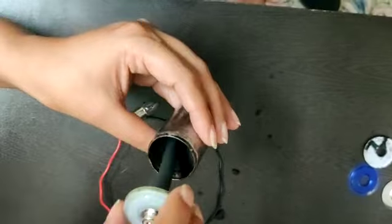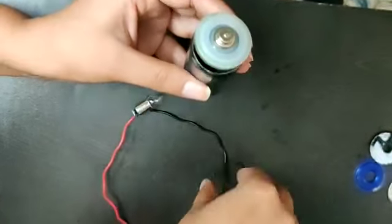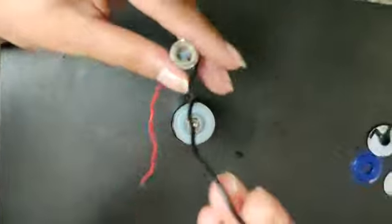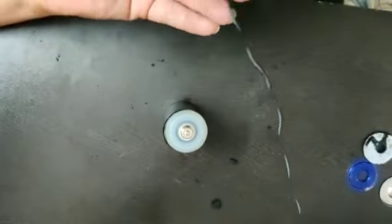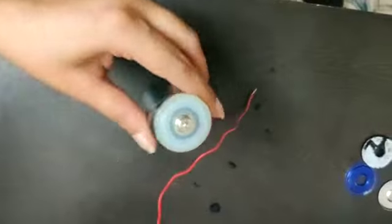But what happens when we complete the circuit by connecting it through the wires? Children, suppose here I have this bulb which I have connected to the two wires, and now I want to make the circuit complete.